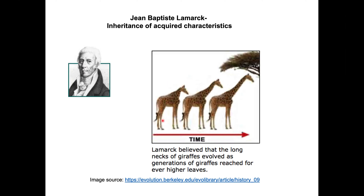When it stretched its neck during its lifetime, the neck got longer, and that longer neck was inherited by the next generation. The next generation kept stretching its neck, and during its lifetime developed an even longer neck, which was then inherited by the following generation. So these changes during their lifetime in response to the environment were passed on to the next generation — that's why it's called inheritance of acquired characteristics.